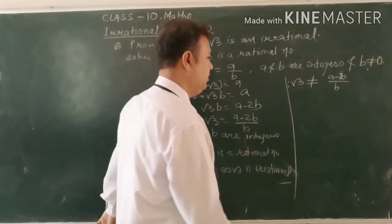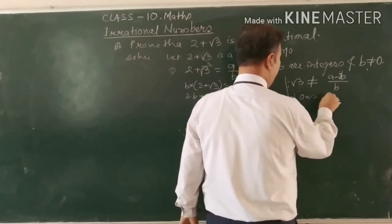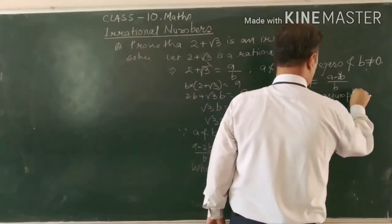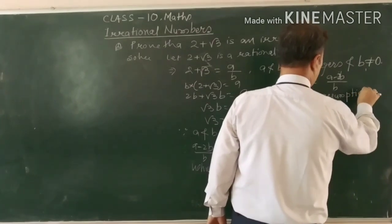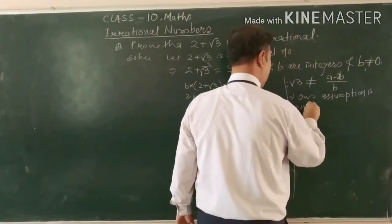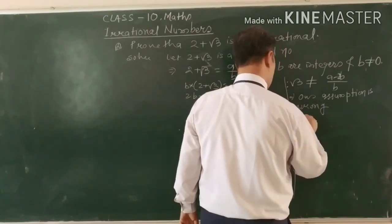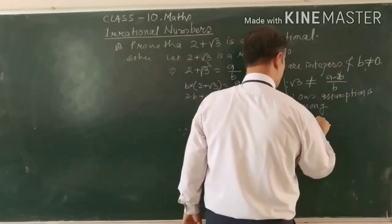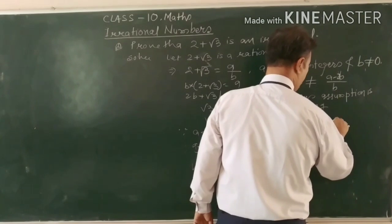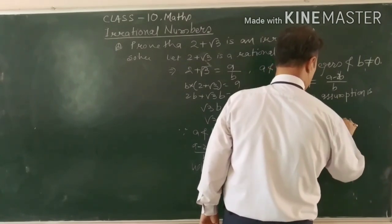But root 3 is irrational. A rational number can never be equal to an irrational number. So root 3 can never be equal to A minus 2B upon B. This means our assumption is wrong — therefore, 2 plus root 3 is irrational.